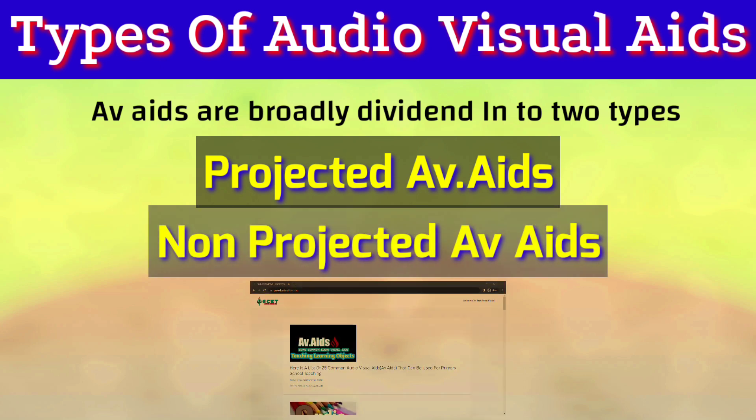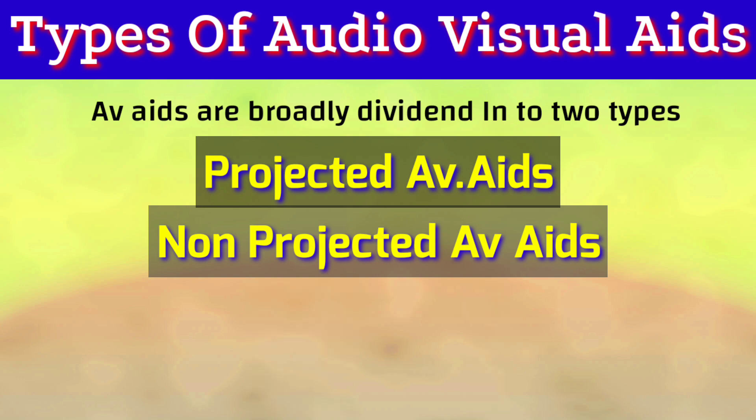Audio-visual aids are broadly divided into two types: projected and non-projected AV aids. When we compare projected and non-projected AV aids with each other,